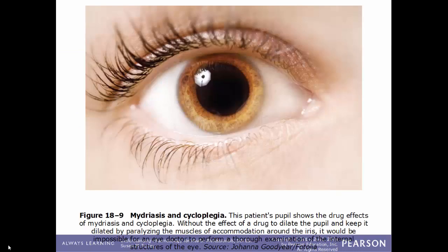In this image we have a patient that has mydriasis and cycloplegia — dilating the pupil and fixing it. You can clearly see very dilated pupils here. This is very common for eye exams or for eye surgeries. Not only do you want to dilate the pupil, but you also want to paralyze the muscles of the iris so there is no accommodation — it doesn't adjust its size to accommodate for the amount of light entering the eye.